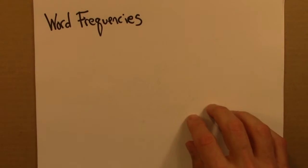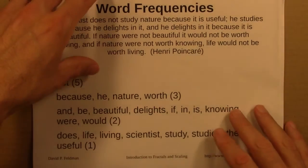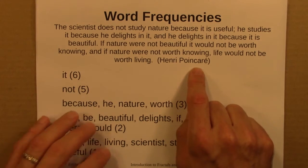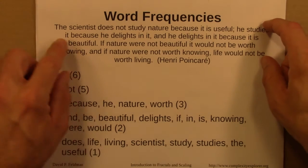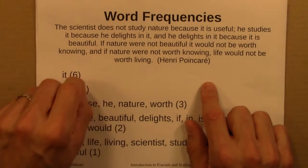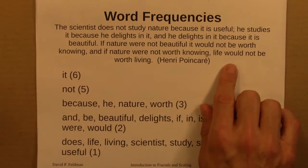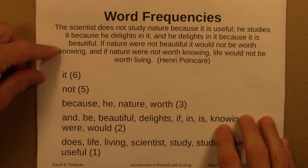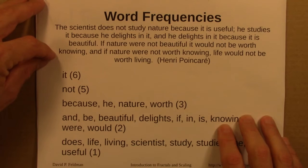I'm going to illustrate this by thinking not about an entire book but just a short quotation first. Here is a passage from the writings of Henri Poincaré, a mathematician who helped found chaos and dynamics. He writes: 'The scientist does not study nature because it is useful; he studies it because he delights in it, and he delights in it because it is beautiful. If nature were not beautiful, it would not be worth knowing, and if nature were not worth knowing, life would not be worth living.'